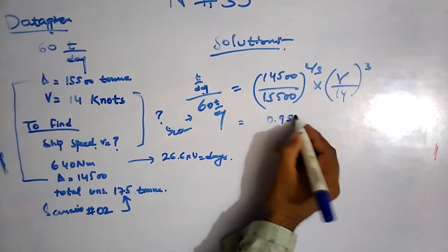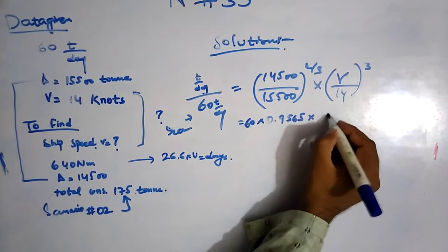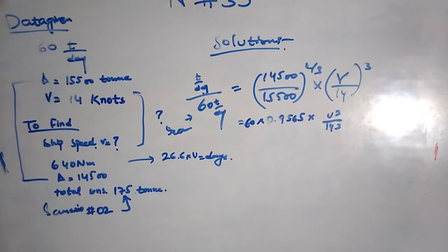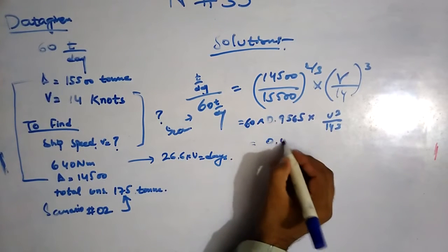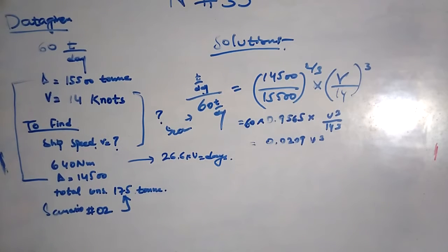If I'm calculating it, it will give me 0.9565. 60 comes here and into the V cubed over 14 cubed. So let me check how far I am correct in this numerical. Okay, I am correct. This is tons per day.